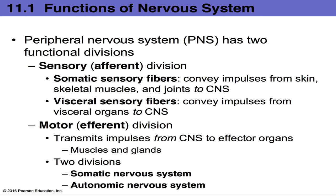The PNS has two main functional divisions: the sensory (afferent) division and the motor (efferent) division. The sensory division detects input from bones, skin, muscles, and organs and sends signals to the CNS — traveling away from the body toward the CNS. The motor division works in the opposite direction: signals exit the CNS and travel to different body parts such as skin, muscles, and organs. A helpful memory trick: afferent means 'away from the body' and efferent starts with E, like 'exit.'